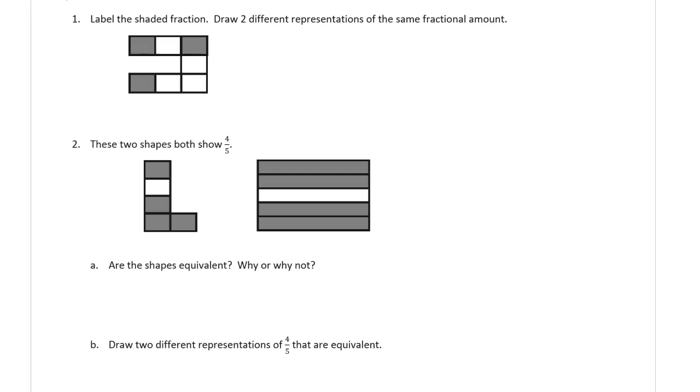So how many pieces are there? There's one, two, three, four, five, six, seven equal pieces. Three of them are shaded, so it's three sevenths.